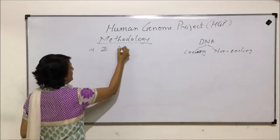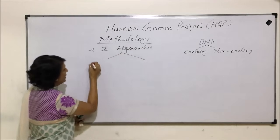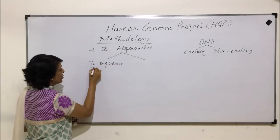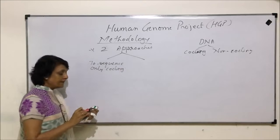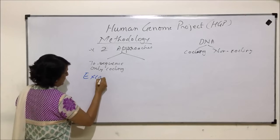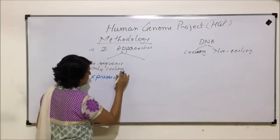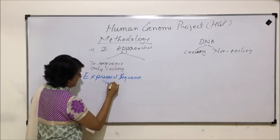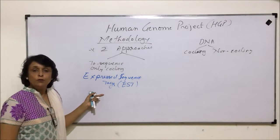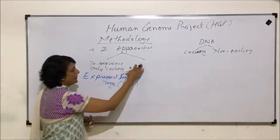They had two approaches. The first was to sequence only the coding part, and this methodology was termed as Expressed Sequence Tags, abbreviated as EST. The plan in this approach was to sequence only that portion of DNA which is actually coding for proteins.